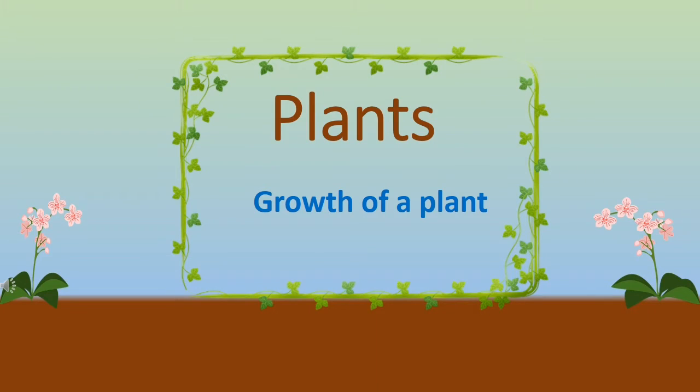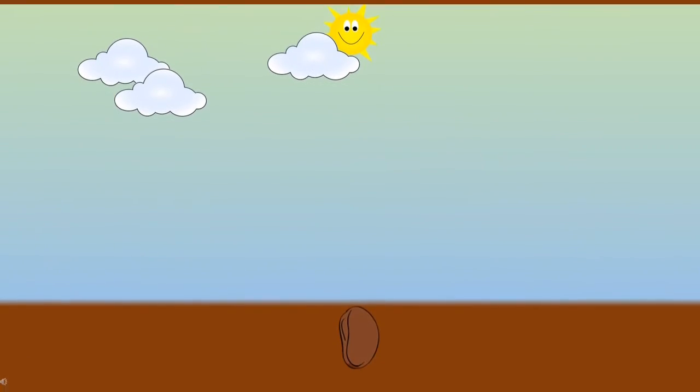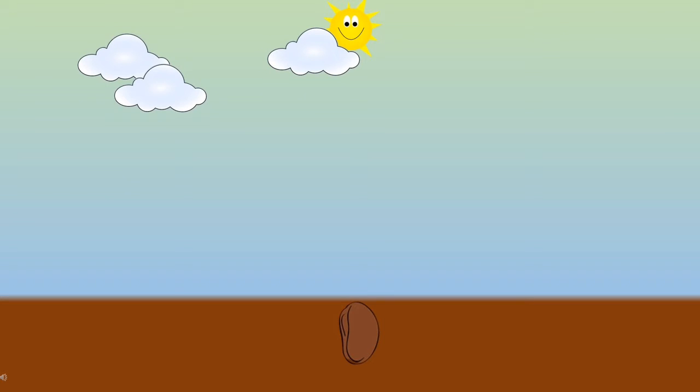Let us take a look at growth of a plant. All living things have a life cycle. Like all living things, plant also has a life cycle or different stages of growth.